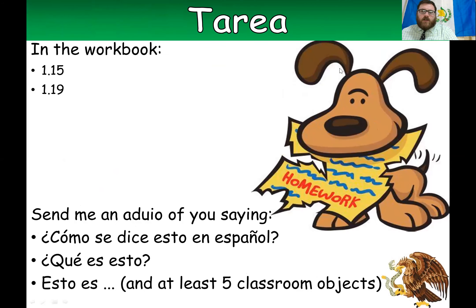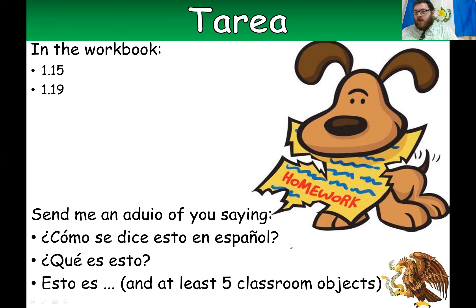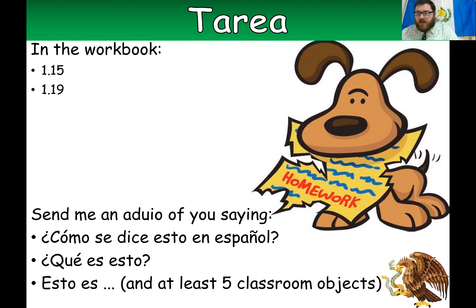For the homework, in the workbook do 1.15 and 1.19 — don't do six, seven, or eight; I think those are a waste of time. Also, I want you guys to send me an audio of you saying '¿Cómo se dice esto en español?' or in the Spain accent '¿Cómo se dice esto en español?' I'd go with Latin American Spanish but your choice. And then 'esto es...' with at least five things we've learned today from this video with the classroom objects. Remember to use 'un' or 'una' to match the gender of the noun.